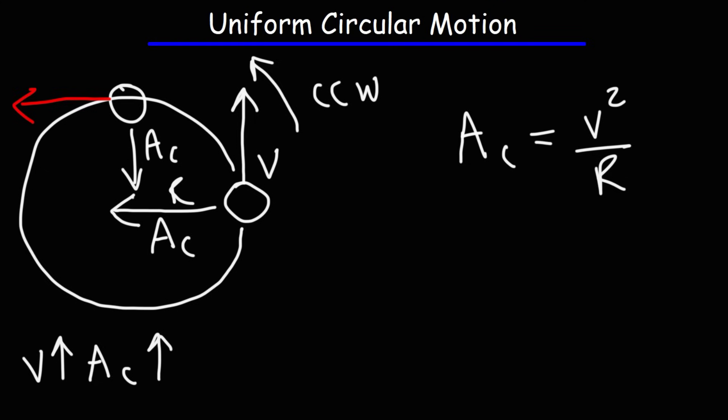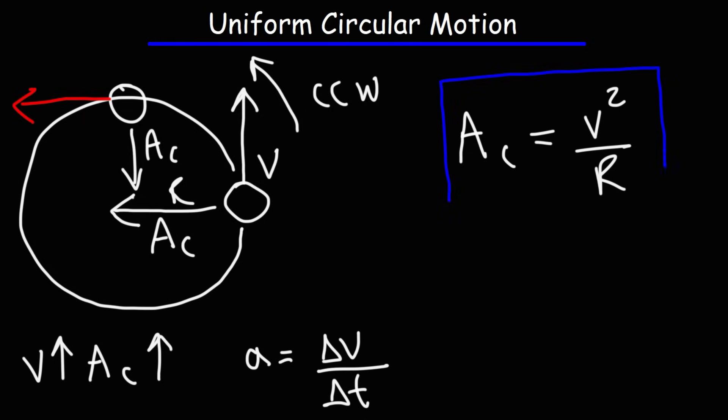Keep this in mind: the object is moving in a circle at constant speed, but because it's changing direction, the velocity changes. And whenever the velocity changes, there's going to be an acceleration, because acceleration is the change in velocity divided by the change in time. Remember, velocity is speed with direction. The magnitude of velocity is constant for uniform circular motion, but the direction changes, which means there is an acceleration. So anytime an object moves in a circle, you'll always have centripetal acceleration.